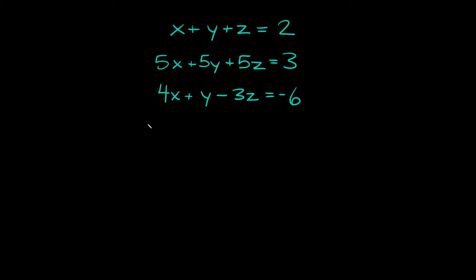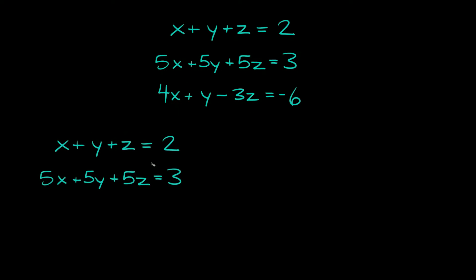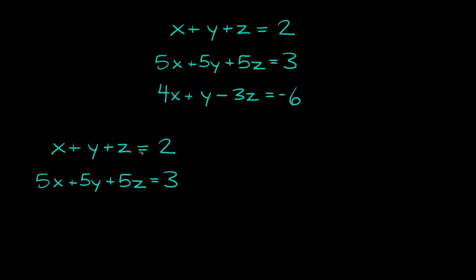The first thing you want to do to solve the system is pick two equations. So here I'll just pick the first two and instead of rewriting them I'm just gonna use some sorcery and drag them down like that. So those are the first two equations. Now I want to just eliminate one variable. So in this case let's just get rid of x.